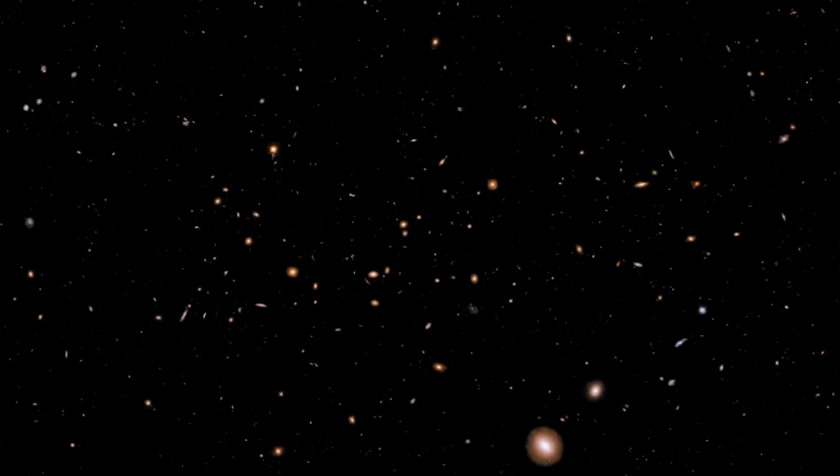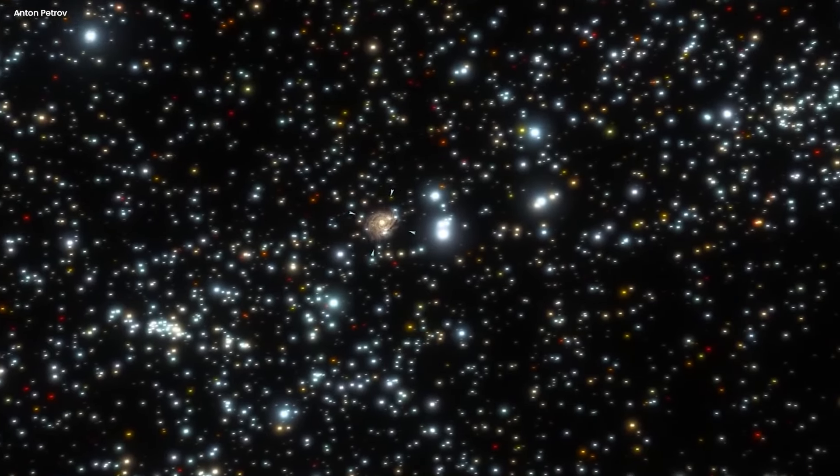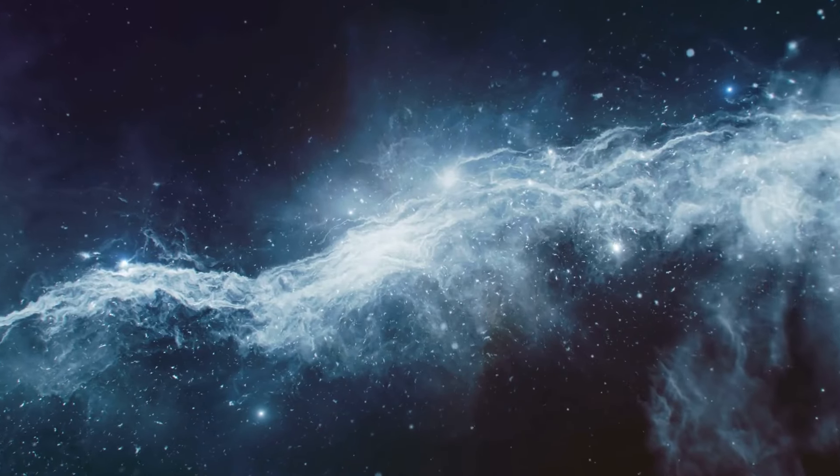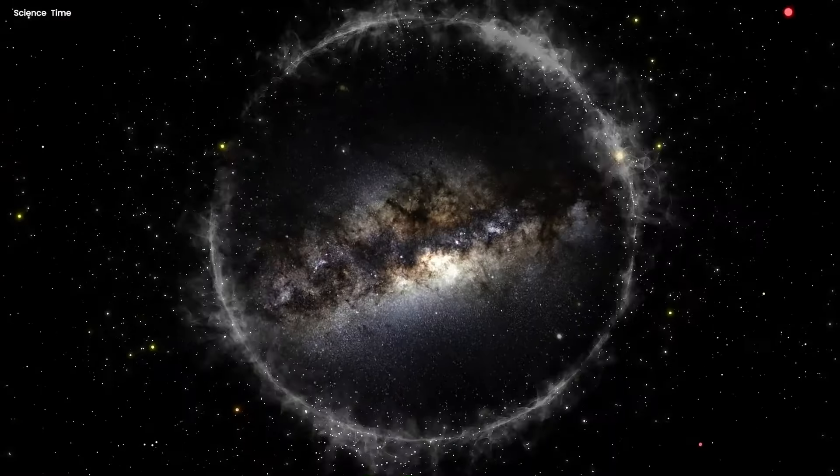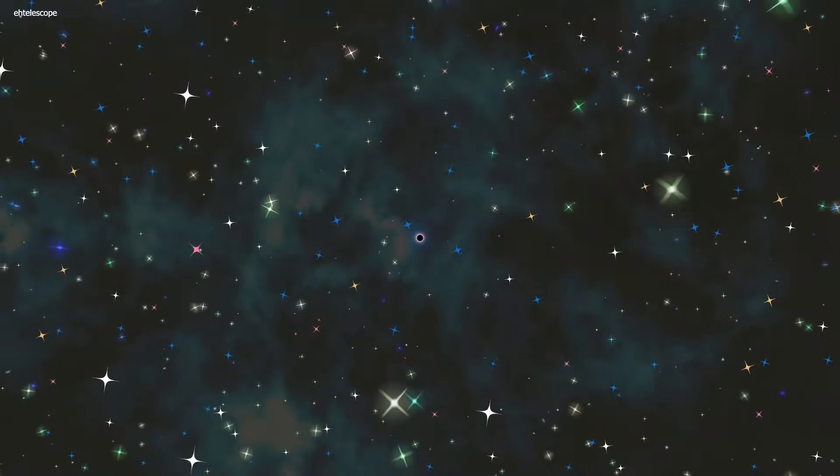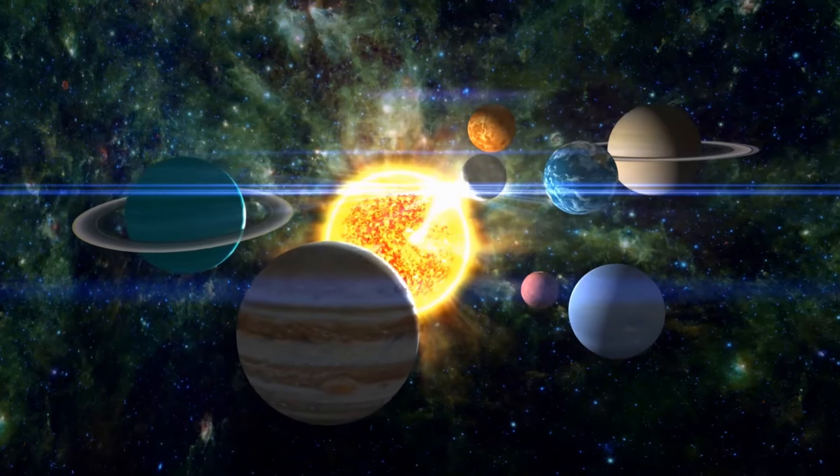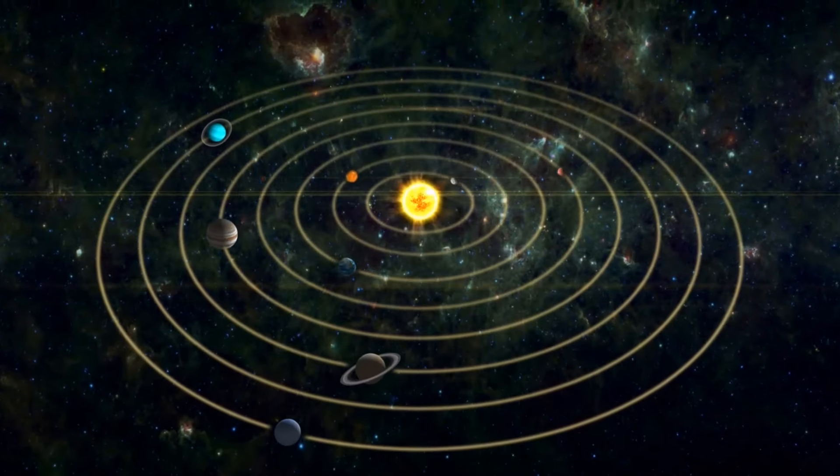But then he noticed something weird. When Oort looked at how fast these stars were moving, and compared it to the amount of visible matter in the galaxy, something didn't add up. It was like the stars were moving way faster than they should be according to the laws of physics. Stars in a galaxy kind of orbit the center, like planets around the sun.